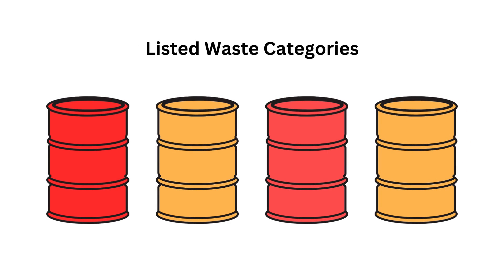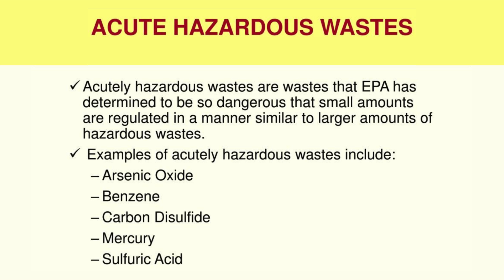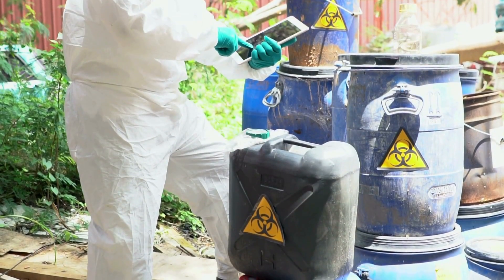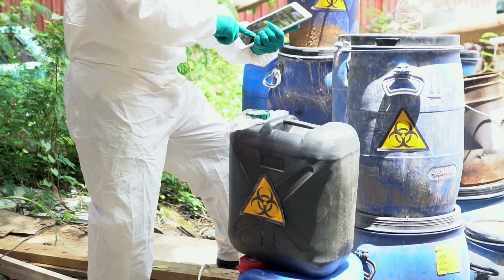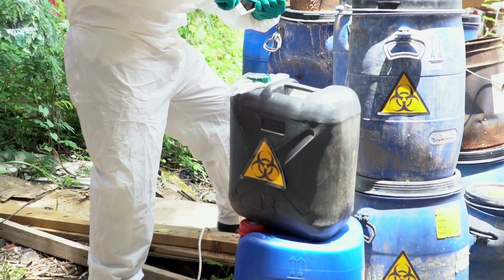Listed wastes are also identified under categorized lists called F-list, K-list, U-list, or P-list wastes, and are specifically named and listed on EPA's website. Acutely hazardous waste is more dangerous than ordinary hazardous waste and is fatal to humans in low doses. The auto sector will likely not generate acutely hazardous waste; however, certain discarded pesticides may qualify.